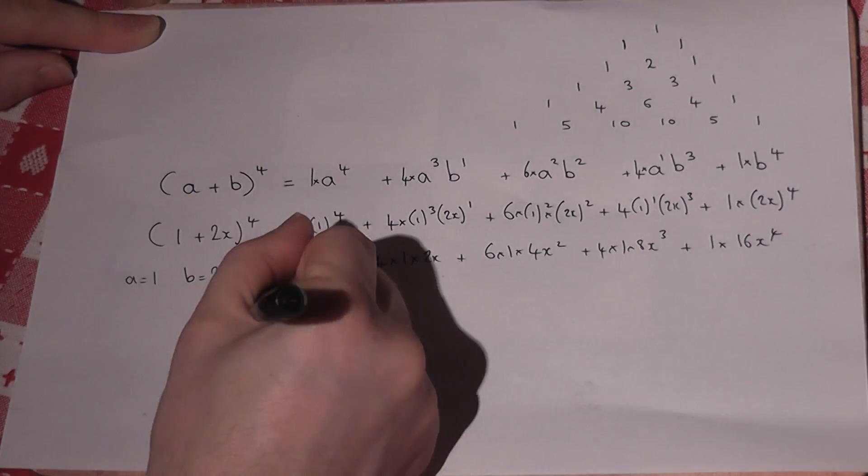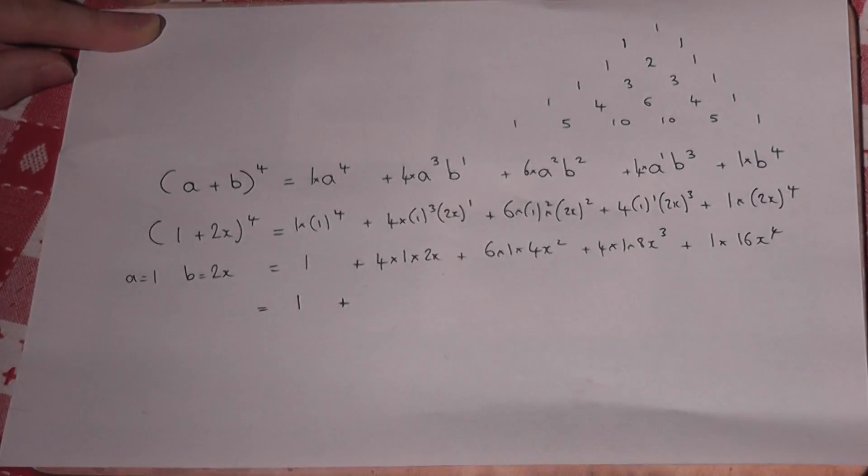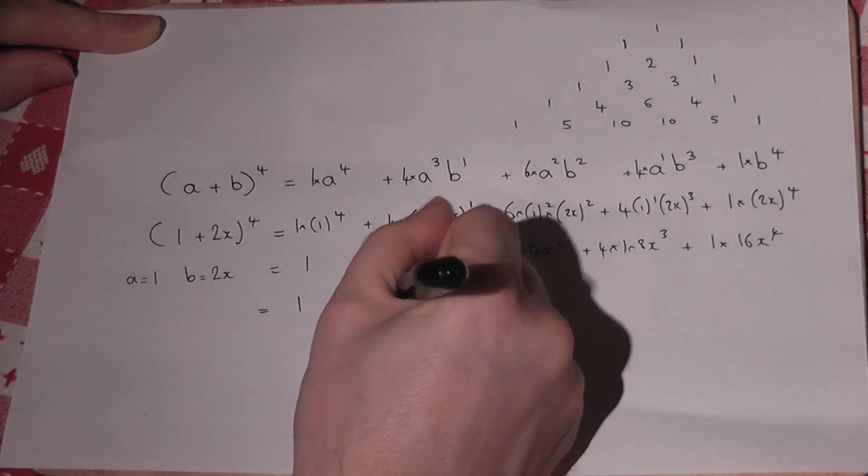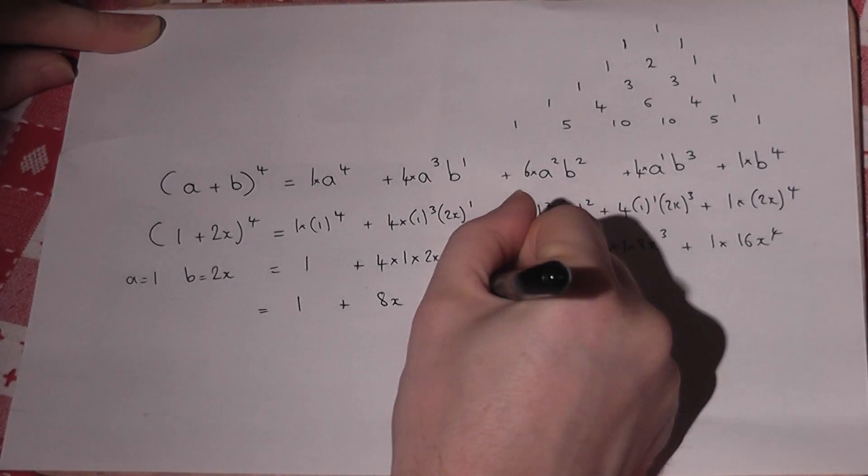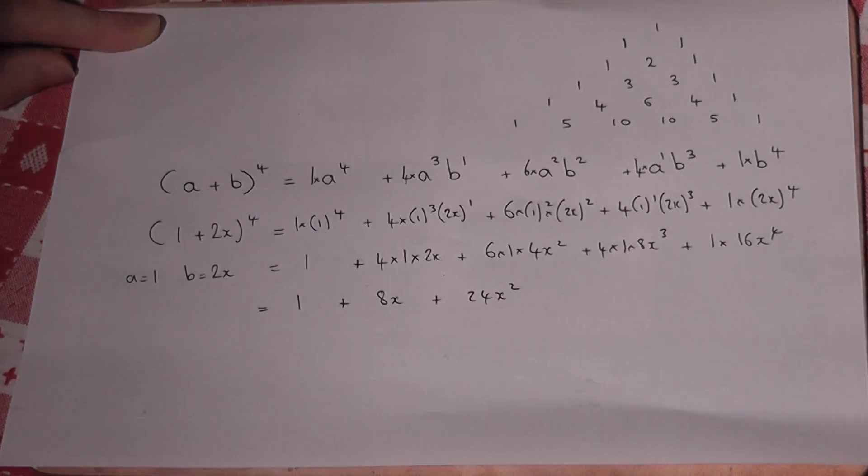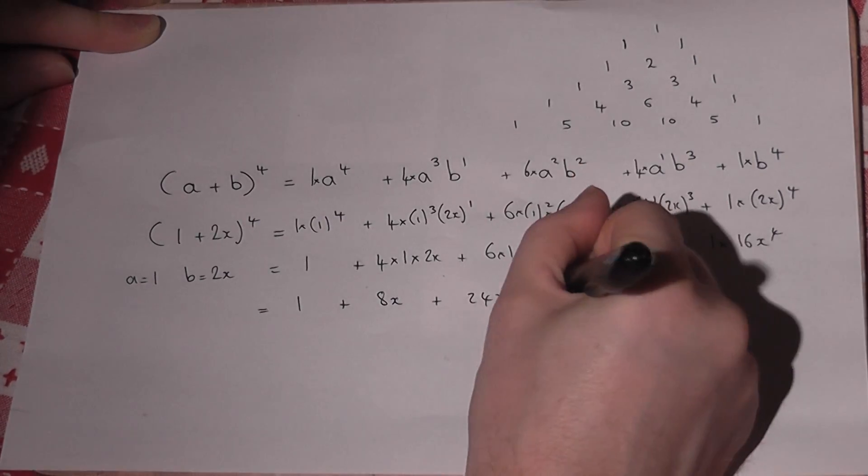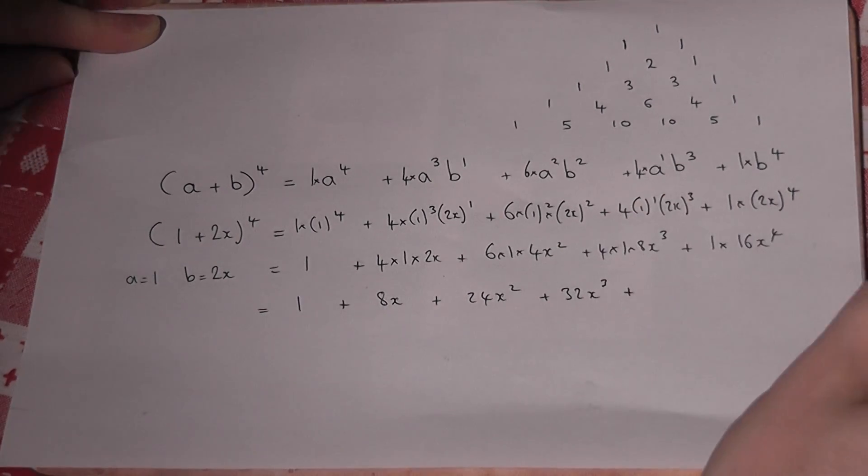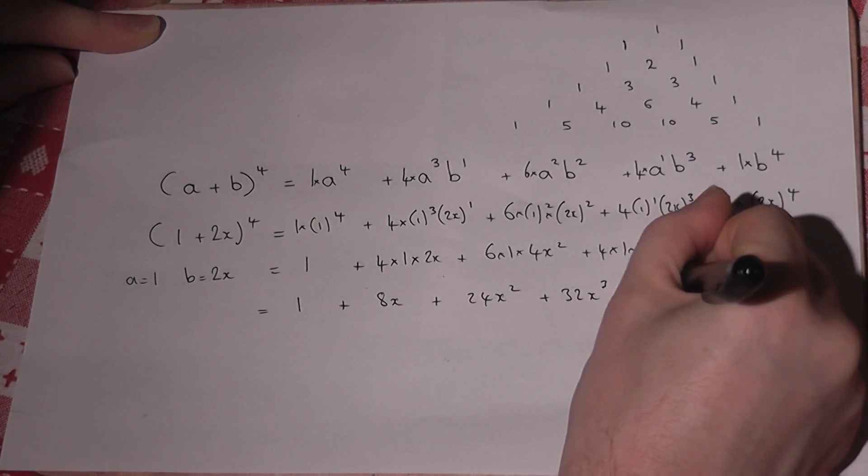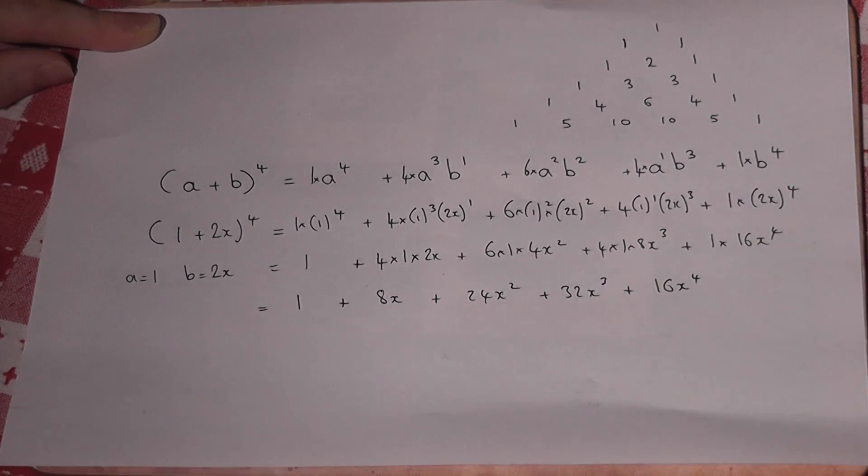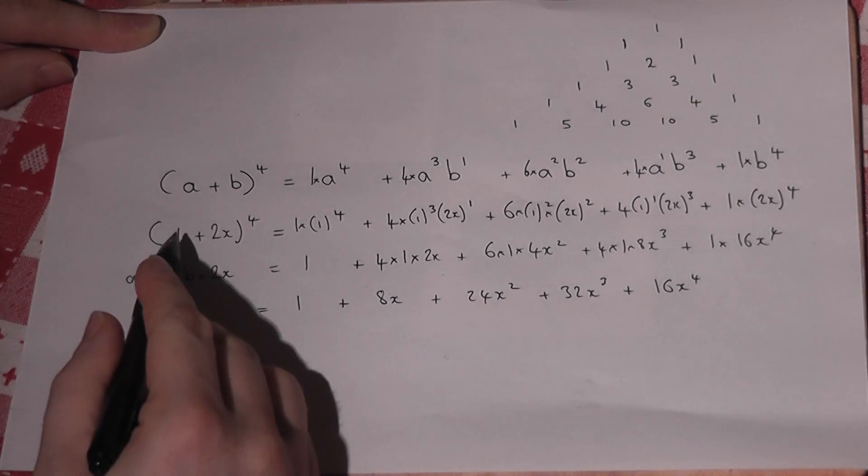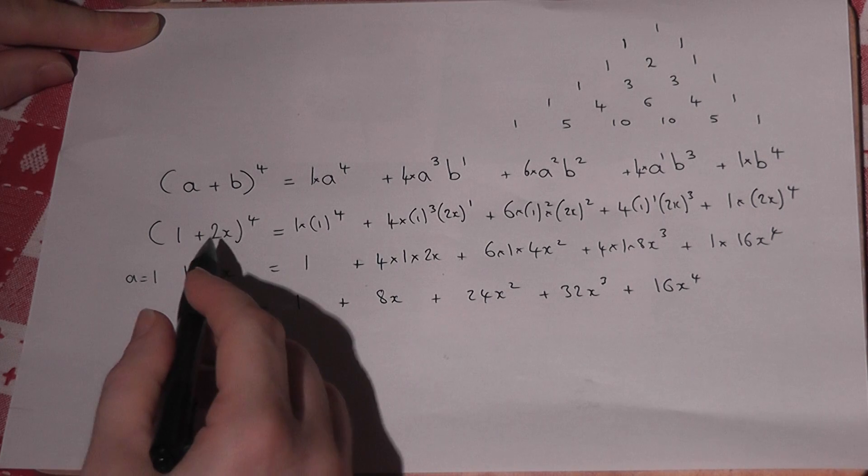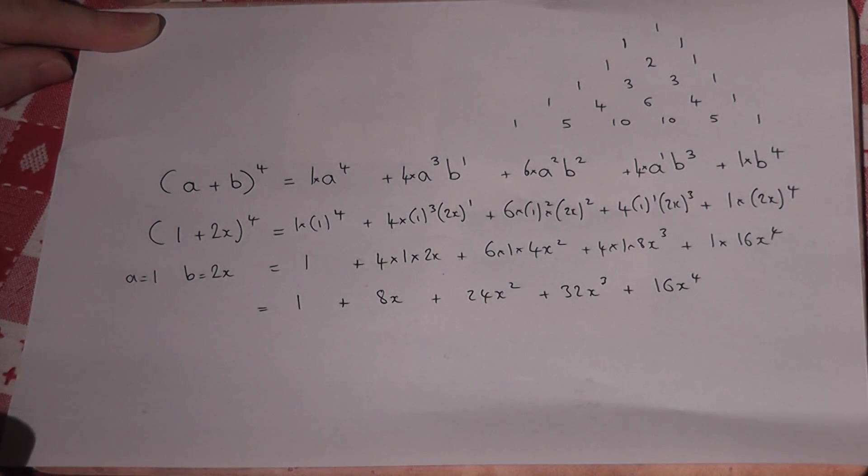And finish off by working it out: 4*2x is 8x, 6*4 is 24, then 4*8 is 32, and finally 1*16 is 16x^4. We've therefore expanded this particular expression quite quickly using Pascal's triangle.